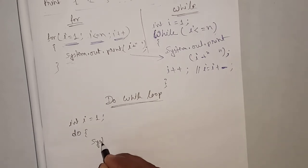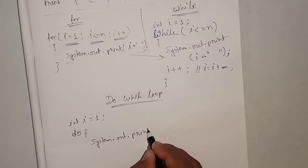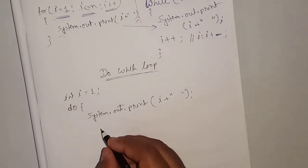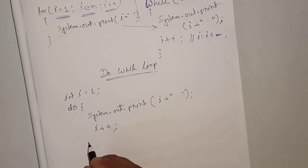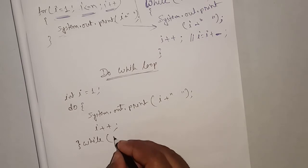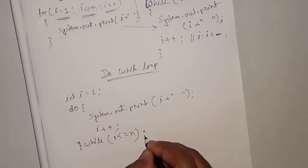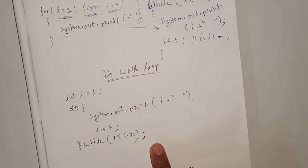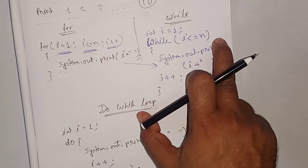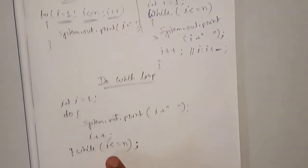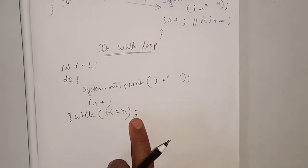In do-while: opening bracket, then write system.out.print value of i and a blank space, then I am increasing the value i plus plus, then write the closing bracket, then while within bracket we write the condition i less than or equal to n, and semicolon. Don't forget to write the semicolon after while in do-while loop. In normal while loop we are not providing any semicolon, because if you provide a semicolon it will terminate before entering inside the loop. In do-while the condition is checked after execution, that's why the semicolon is required.